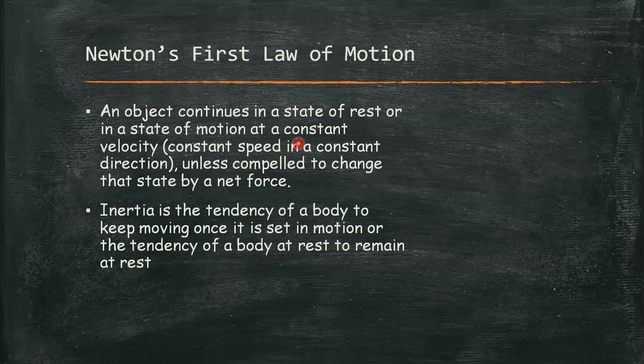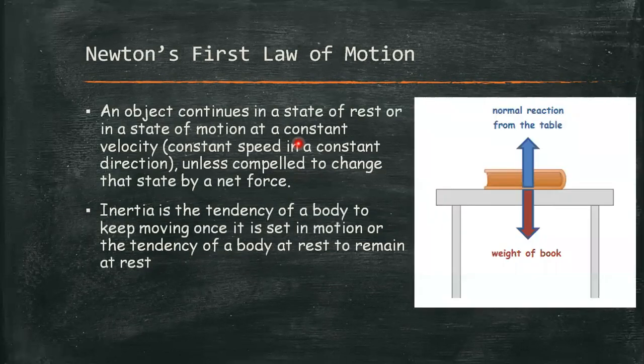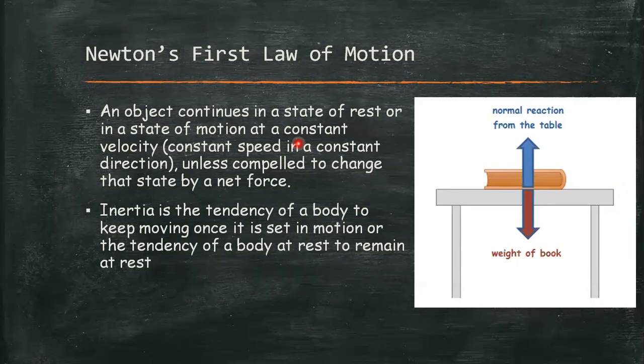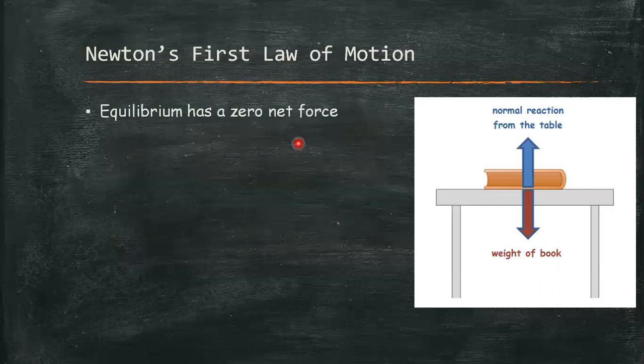It's important to note that the net force is what matters in Newton's First Law. For example, a physics book at rest on a horizontal table has two forces acting on it: first, the upward supporting force coming from the table or the normal reaction of the table, and the second force is the weight of the book exerted by the book to the table due to gravity. When a body is either at rest or moving with constant velocity in a straight line with constant speed, we say that the body is in equilibrium.